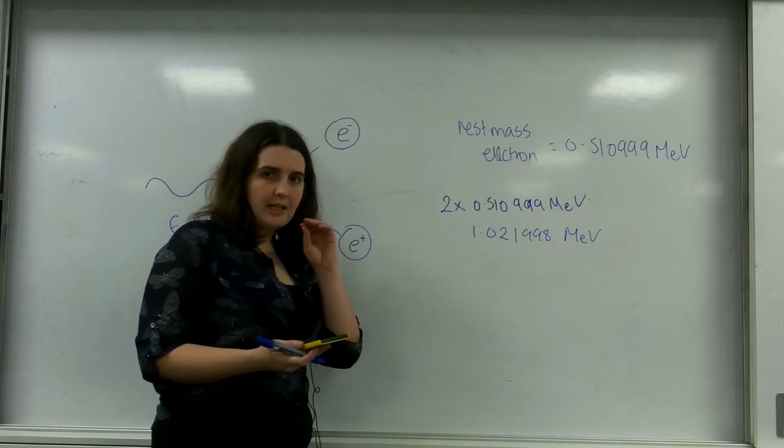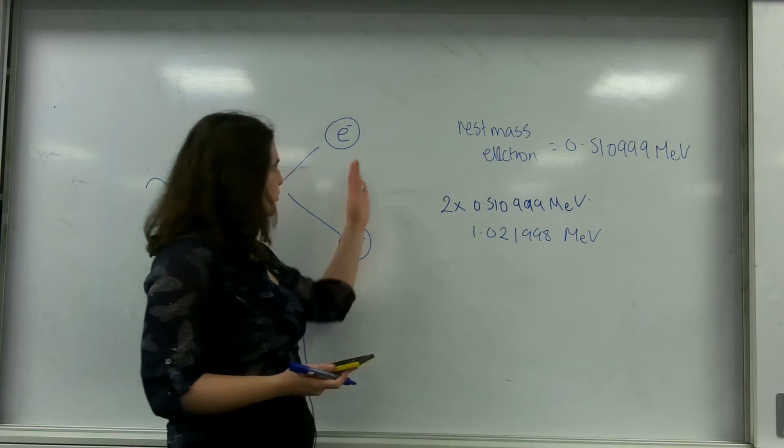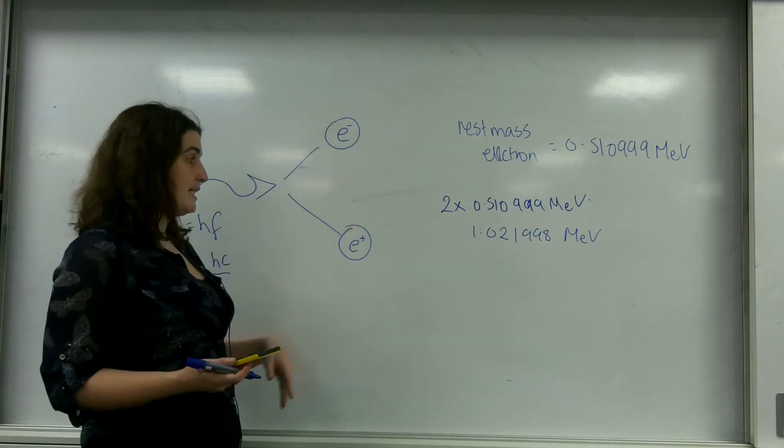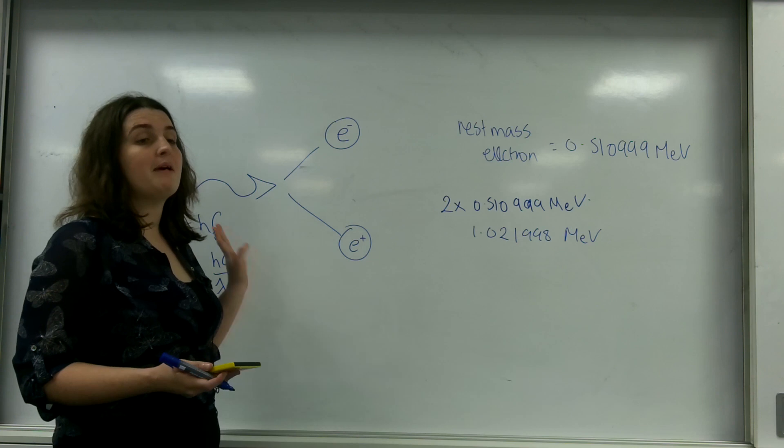This means to just even create these two particles here, this particle and this antiparticle, this must be the minimum energy of my photon.